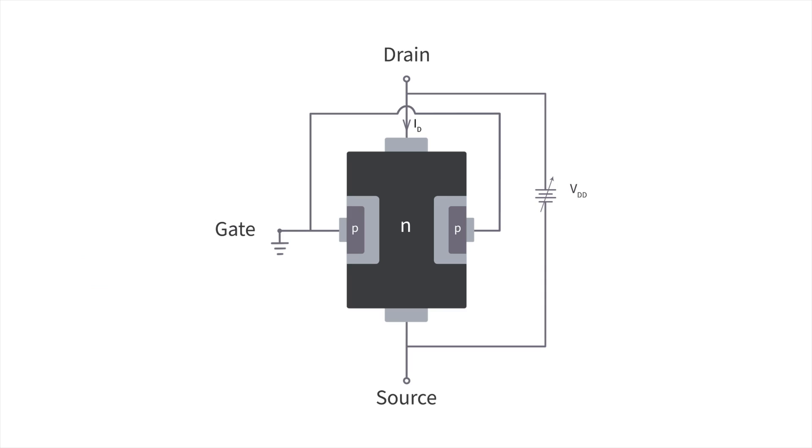Besides current flow, there is one other important thing happening inside the JFET. As the channel is not perfectly conductive, you can consider it as a spread out resistor. And as current passes through the channel, there is a voltage drop across the channel.